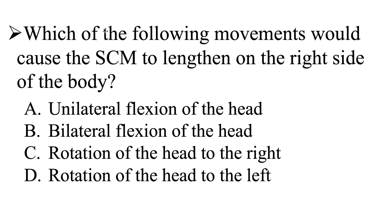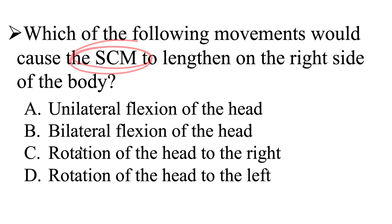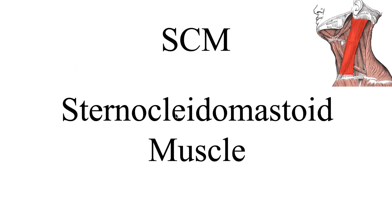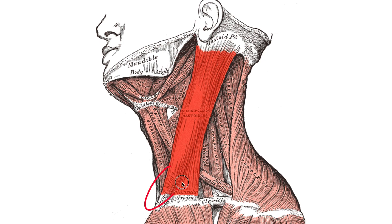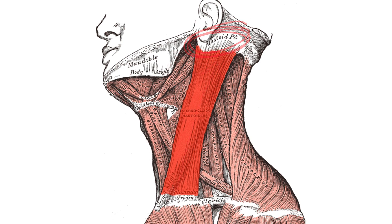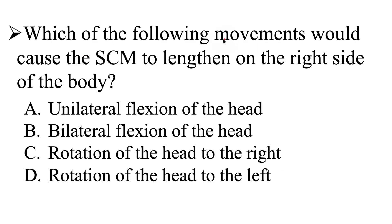Let's take a look at this question one more time: which of the following movements would cause the SCM to lengthen on the right side of the body? First, we have to figure out what the SCM is. The SCM is our sternocleidomastoid muscle. It has two muscle heads — the sternal head and the clavicular head — originating at the sternum and clavicle, and inserting at the mastoid process at the base of the skull.